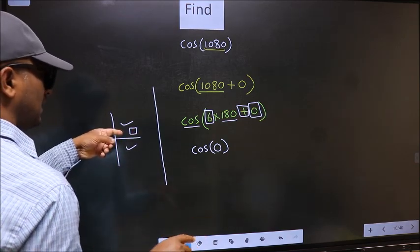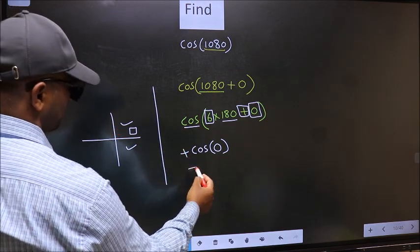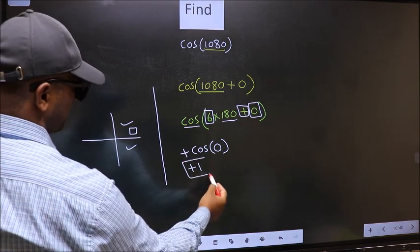And in the first quadrant, cos is positive. So we should put plus. So plus cos 0 is 1. This is our answer.